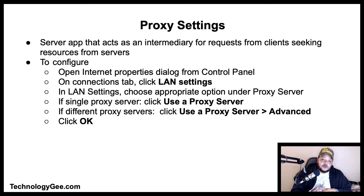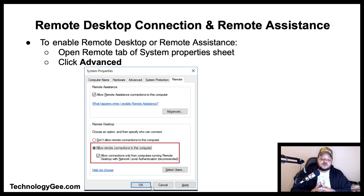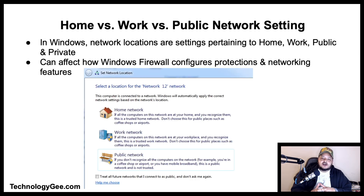Remote Desktop Services is one of the components of Microsoft Windows that allows a user to take control of a remote computer or virtual machine over a network connection. To enable Remote Desktop or Remote Assistance, open the Remote tab of the System Properties sheet. Click Advanced to specify how long an invitation remains valid and whether to accept connections only from Windows or newer versions.